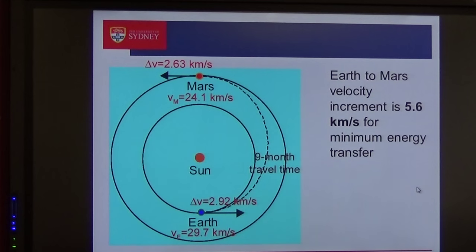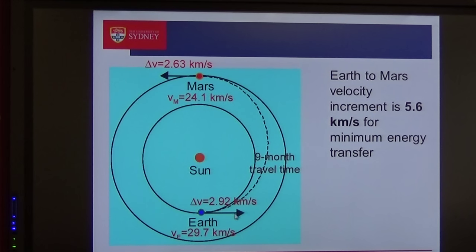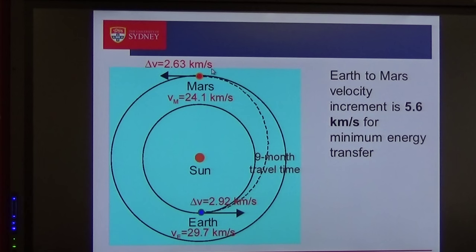For example, if you want to go directly from Earth to Mars, you need to first get into the Mars orbit — a delta-V of 2.97 km/s — and when you get there, you need to get into orbit around Mars, another increment of 2.63 km/s. That's a total increment of around 5.6 km/s.